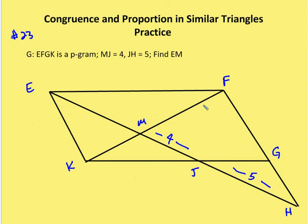Moving on to problem 23: EFGK is a parallelogram. MJ is 4 and JH is 5. We're going to find EM and figure out what X is. We have a parallelogram with a transversal EH, so let's mark it.